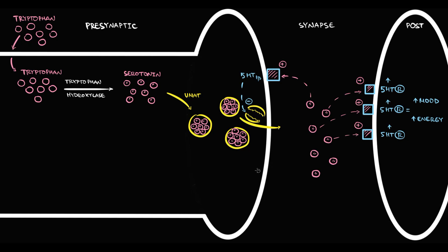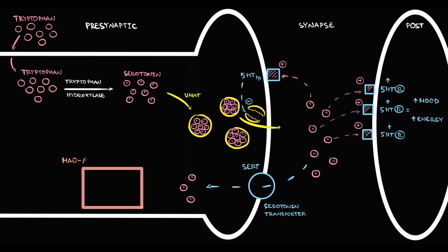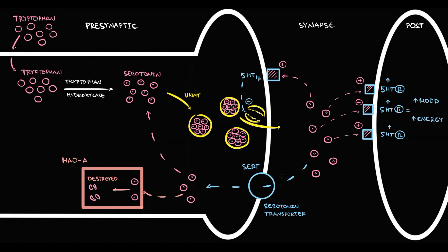What happens to serotonin molecules that did not have time to bind to any receptor? On the presynaptic neuron we have a serotonin transporter called SERT. This transporter uptakes free serotonin molecules and delivers them back to the presynaptic neuron, where monoamine oxidase A is waiting for them. Most of the delivered serotonin molecules have a tragic fate — monoamine oxidase uptakes and destroys them. But some serotonin molecules slip away and replenish the serotonin pool inside newly formed vesicles.